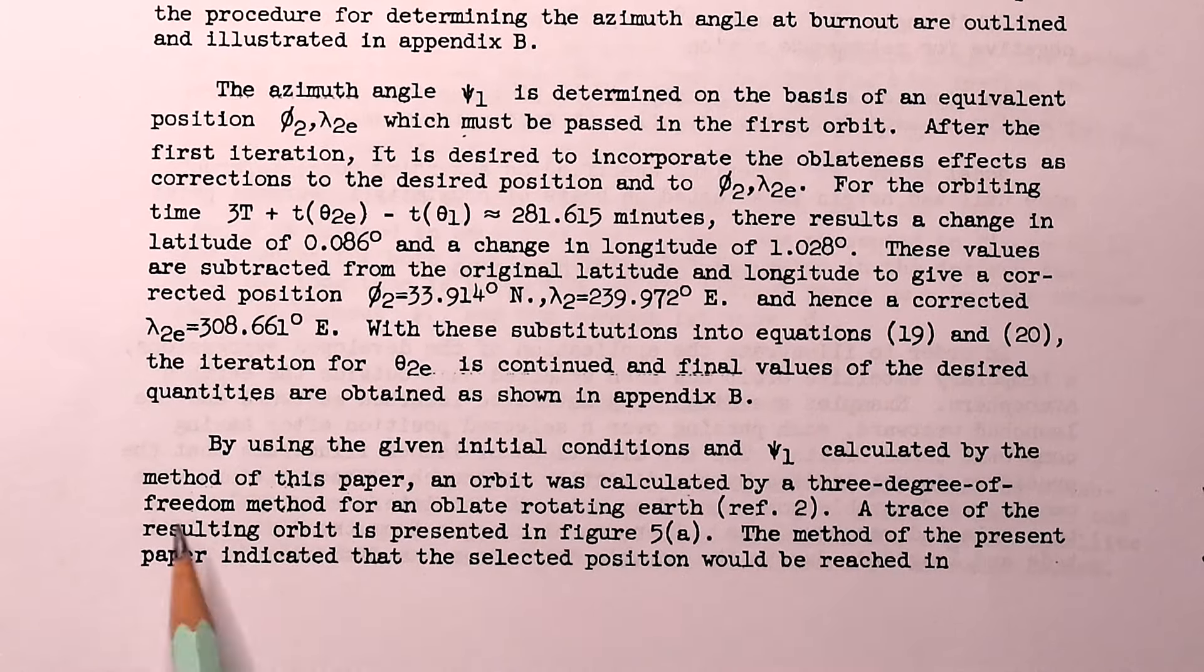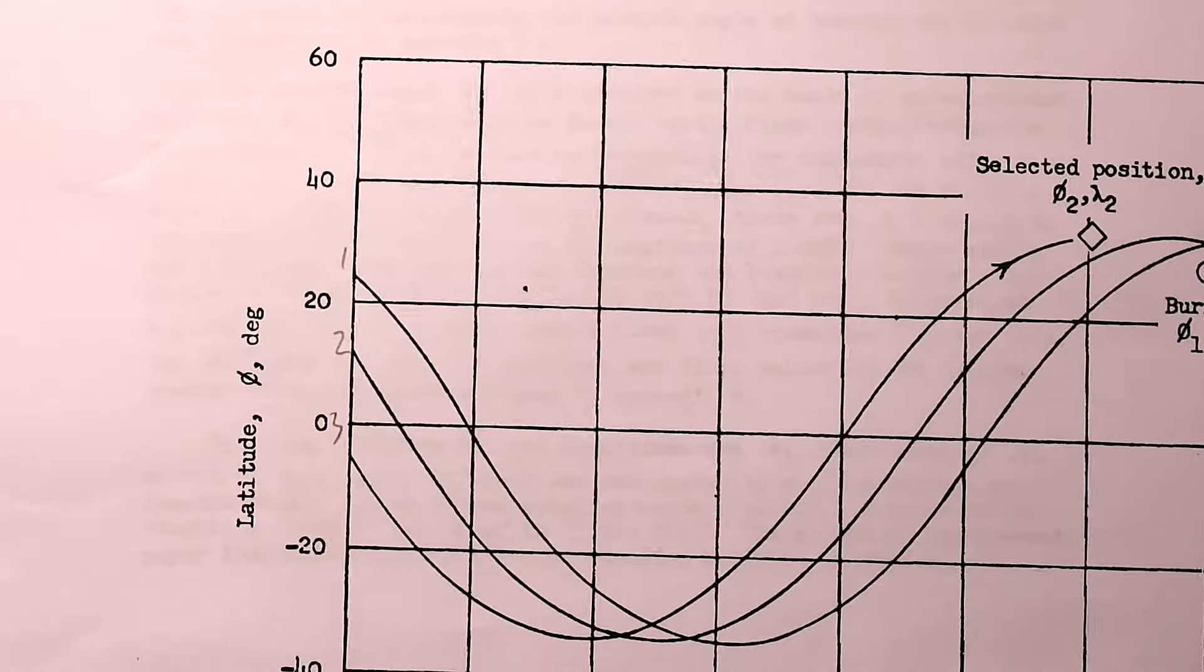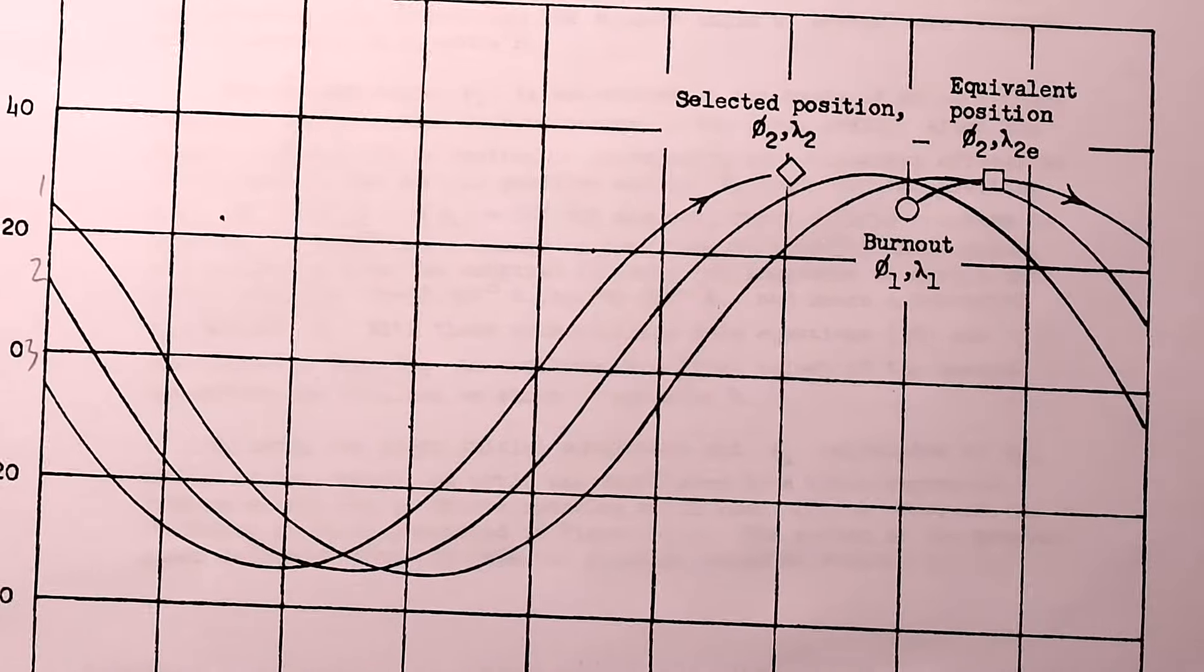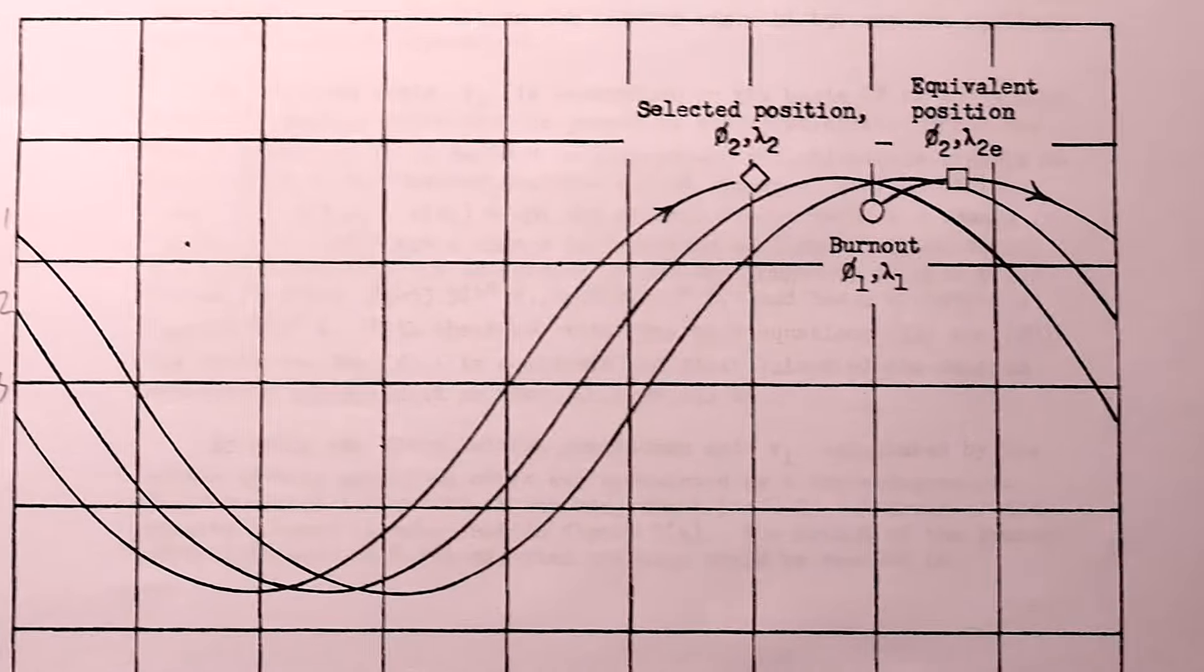And it's the trace of that resulting orbit that is presented in figure 5a. So this is actually what the computer has given us for what the orbit will look like.